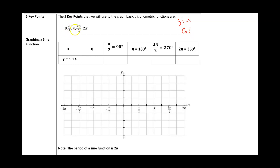Those five key points are zero, pi over two, pi, three pi over two, and two pi. The main focus is to know how to get the y-values for these five key points for sine of x and cosine of x. We'll also see other key points for tangent and cotangent.